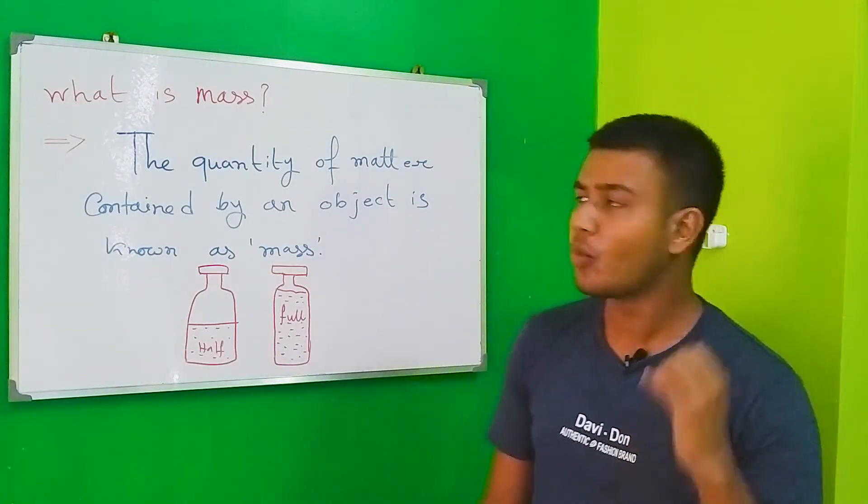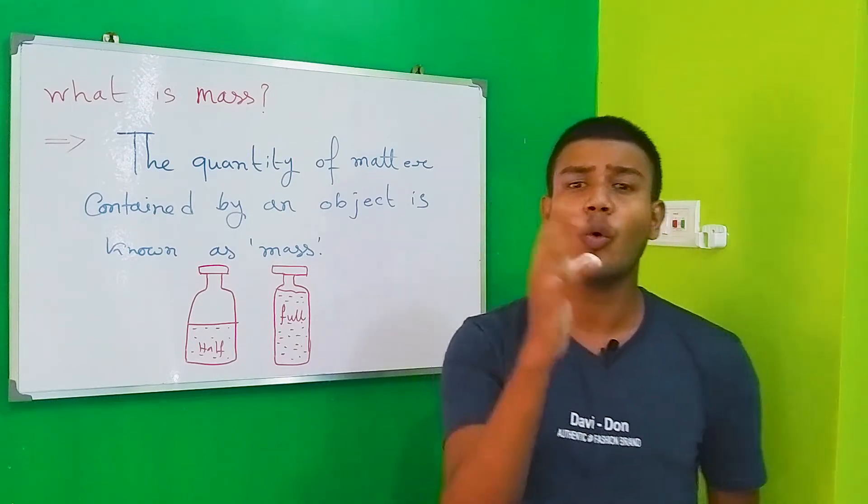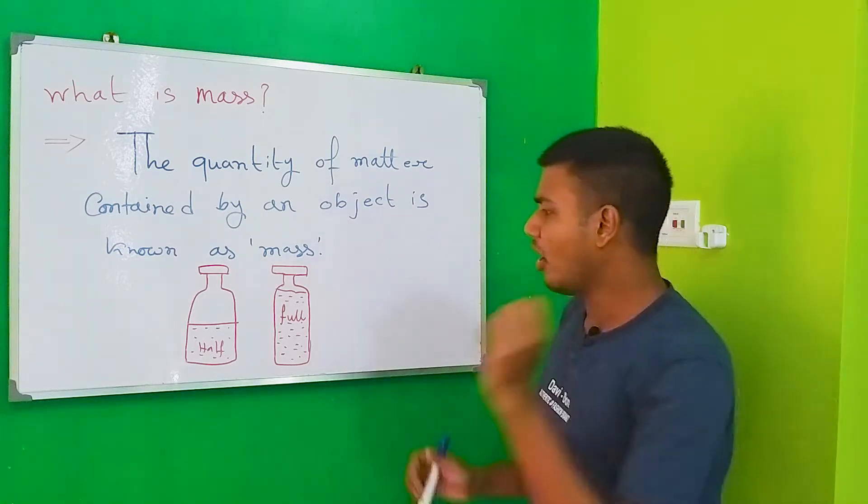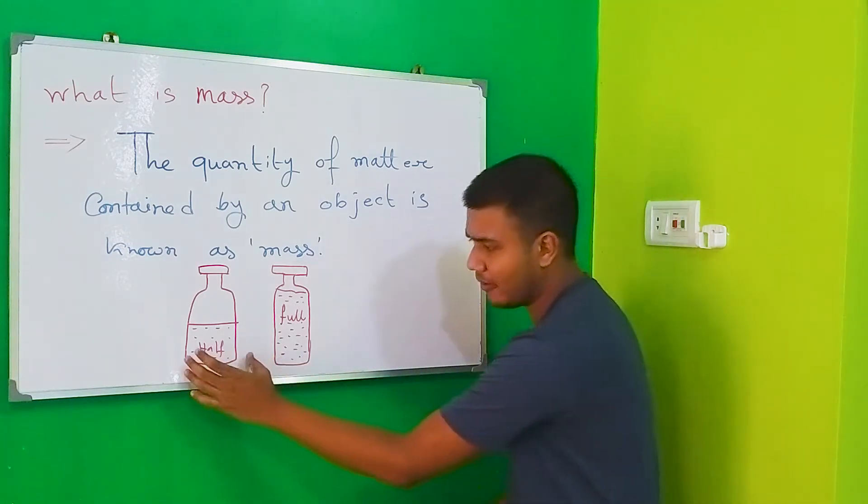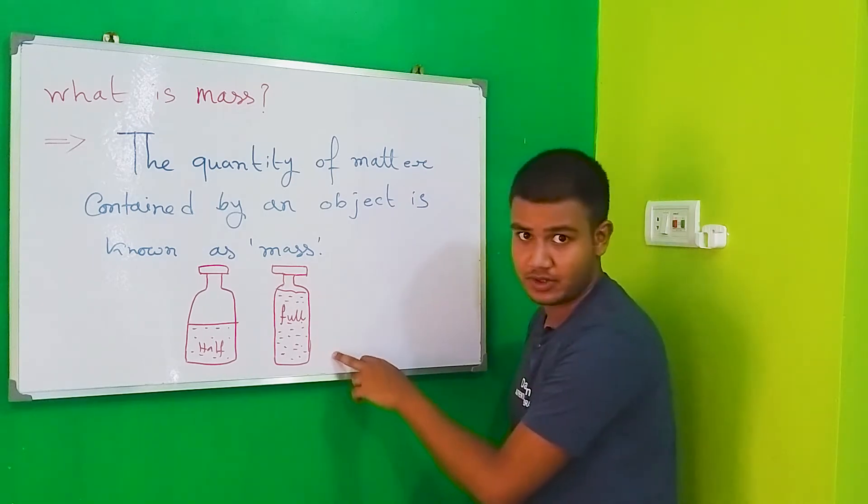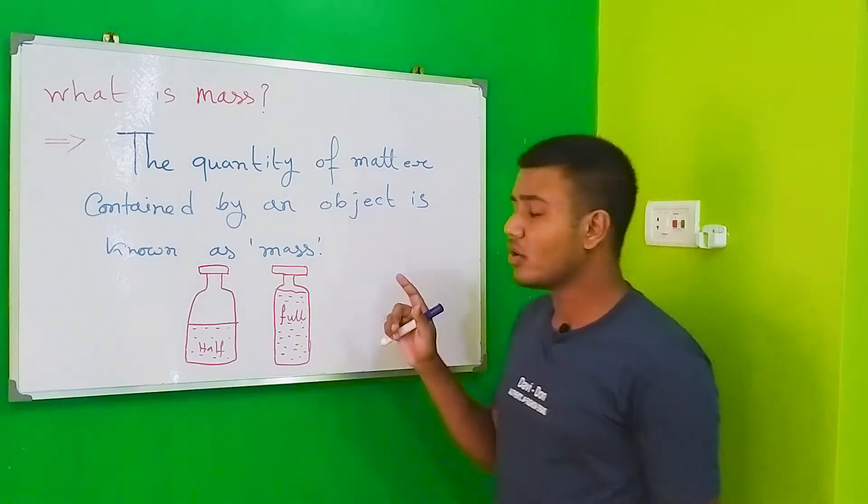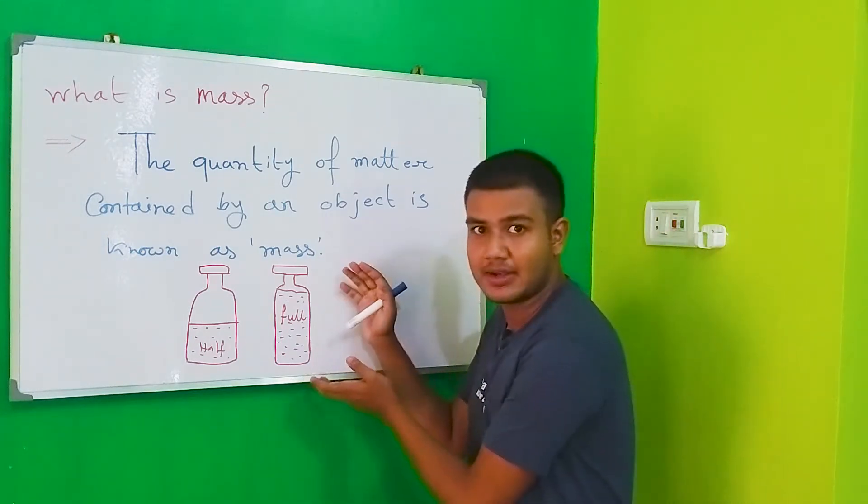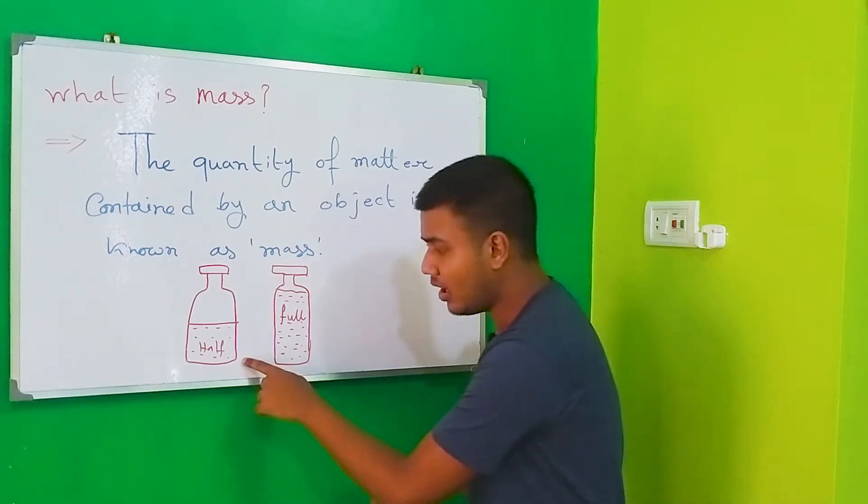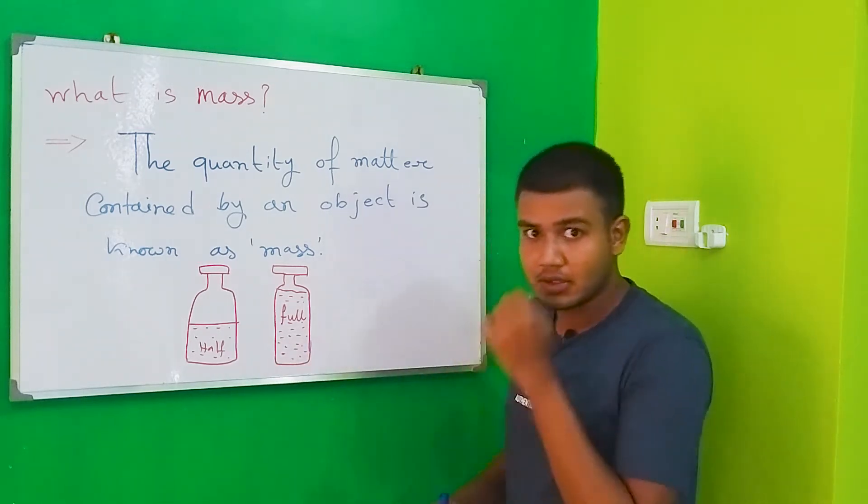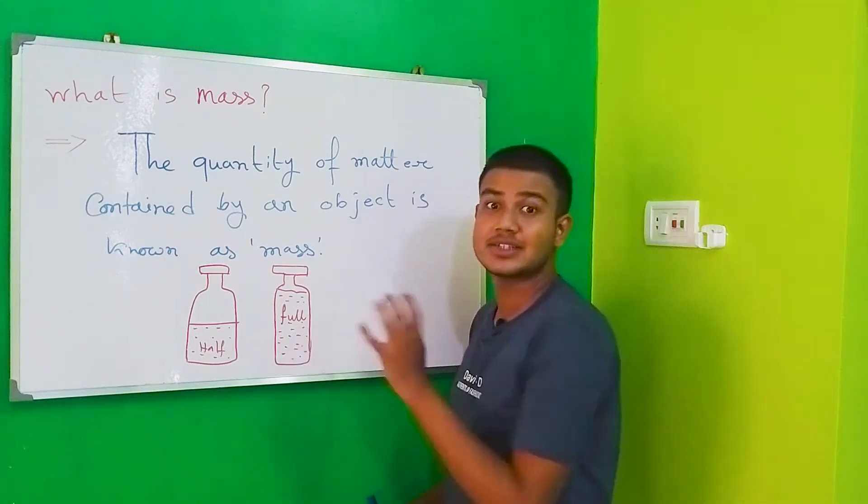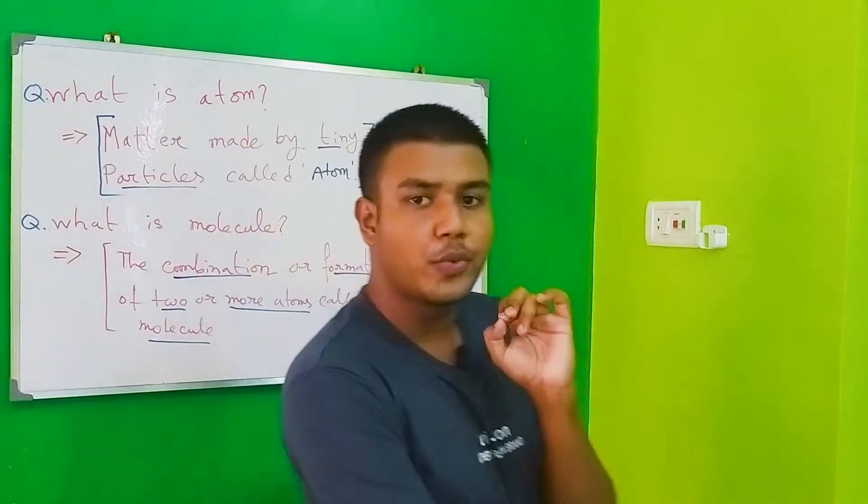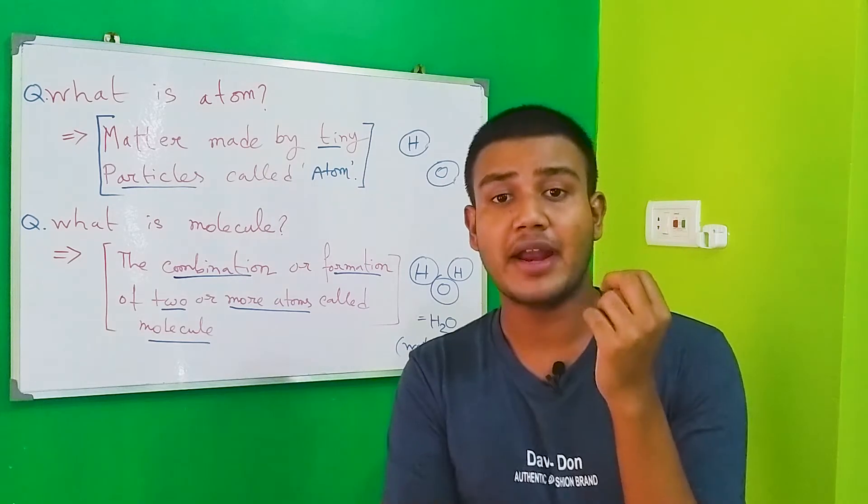Now we will talk about mass. What is mass? Mass is nothing but the quantity of matter. Suppose I give you a very easy example - you got two bottles, one is half filled and another is completely filled with water. The quantity of matter, that is the water in this case, is quite more in the full one compared to the half one. So you can say that the full bottle contains more mass. Now the big question is: what is matter made from?